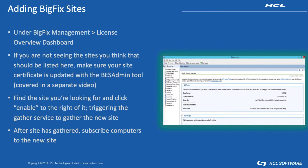You scroll down the list and you'll be able to click Enable to the right side of any of the sites that you want to gather. From that process it'll trigger the actual gather service to gather that new content. Once that finishes, you'll be able to subscribe computers to that new site and begin utilizing the new content.